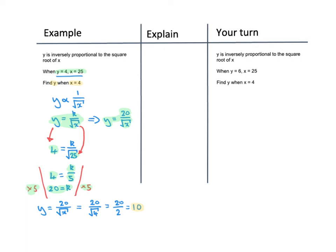Let's have a look at the question on the right-hand side. Firstly, we write the statement: Y is proportional to the inverse of the square root of X. We generate a formula by introducing a constant K, which we'll need to find. We've been told that when Y is 6, X is 25. We substitute those two values in, and we can simplify this by finding the square root of 25 — in other words, 6 is equal to K over 5.